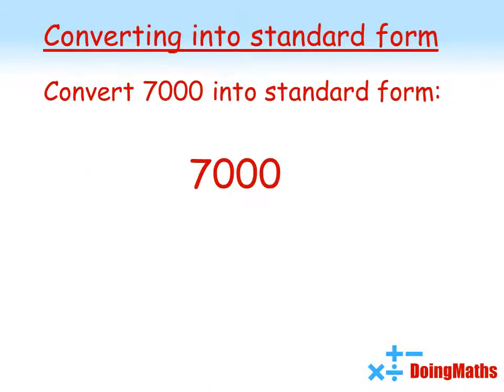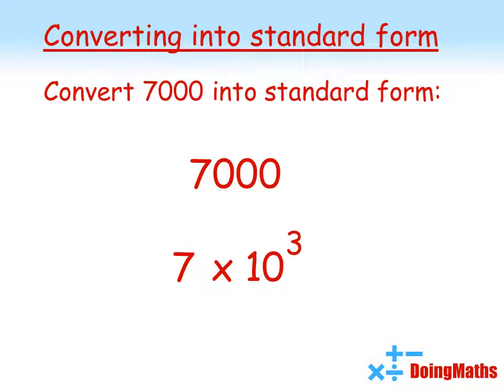So let's have a go at converting a normal number into standard form. Here's the number 7000. The first thing to do is find the part of the number that isn't zero — so that's 7. This has to be times by 10 to the power of something, and we've got to work out what that something is. To get from 7 to 7000 there's a difference of three decimal places, so it must be to the power of 3. These two numbers are exactly the same: 7 times 10 to the power of 3 equals 7000 — the top one is written the normal way, the bottom one is written in standard form.